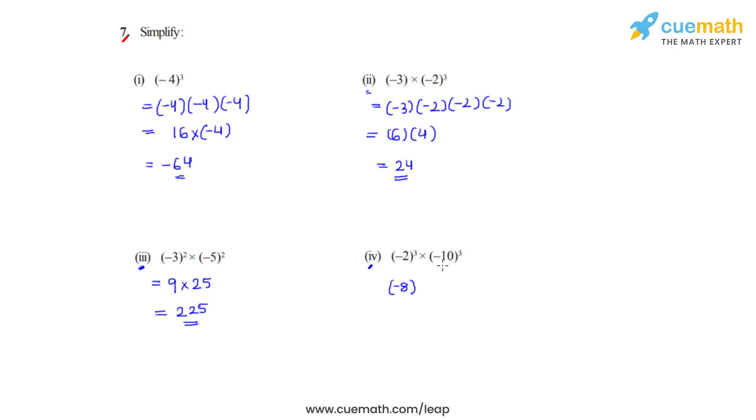Similarly, negative 10 is again raised to an odd power so that will become negative 1000. But when negative 8 and negative 1000 is multiplied, their product becomes positive because negative times negative is positive. So we get the answer as 8000.